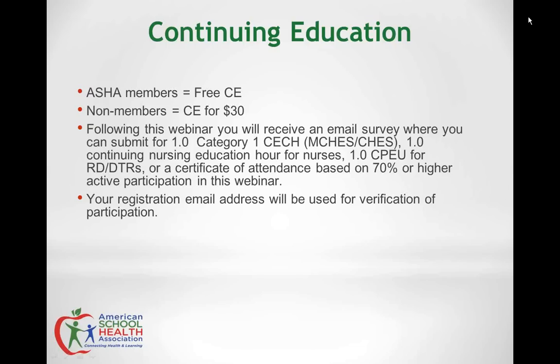The continuing education credit for today's webinar is free for all members. If you are a non-member and would like to receive CE credit, we require a payment of $30. After the webinar, you can receive one Category 1 CECH for MCHES and CHES, one CNER for nurses, one CPEU for RDs and DTRs, or a certificate of attendance based on 70% or more participation today. Participation is measured by the amount of time the webinar remains active on your screen. We'll provide details for obtaining CE in a post-webinar email this week.